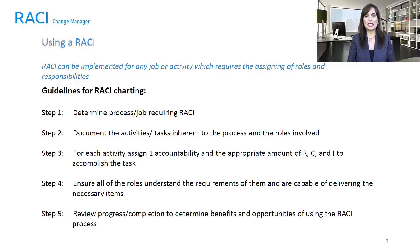RACI can be implemented for any job or activity which requires the assigning of roles and responsibilities. Step 1: Determine the process or job requiring RACI. Step 2: Document the activities or tasks inherent to the process and the roles involved. Step 3: For each activity, assign one accountability and the appropriate amount of R's, C's, and I's to accomplish the task. Step 4: Ensure all of the roles understand the requirements and are capable of delivering the necessary items. Step 5: Review the progress or completion to determine the benefits and opportunities of using the RACI process.